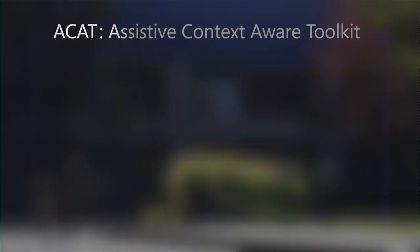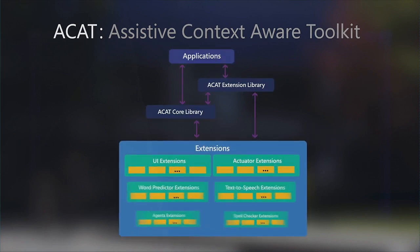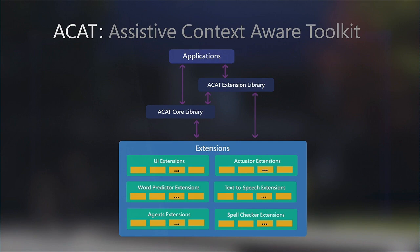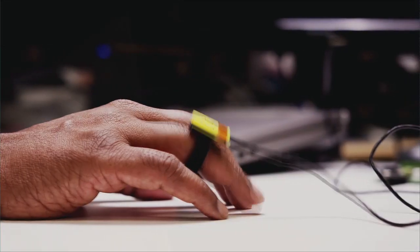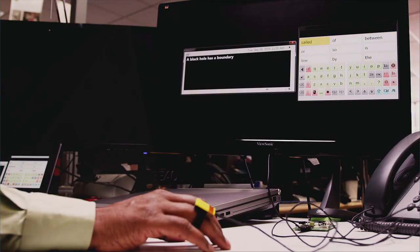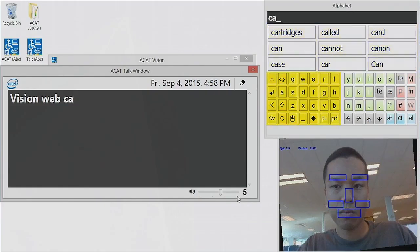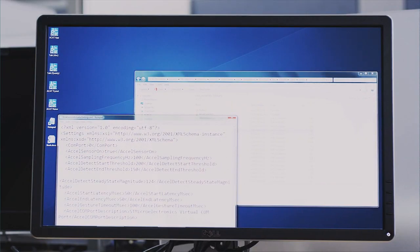We wanted to build a more open platform that allowed us to really quickly configure and change things so that we're constantly iterating and trying. Bring in different word predictors, bring in different sensors, change the UI — do all of these things by way of just changing XML files rather than doing a lot of coding.